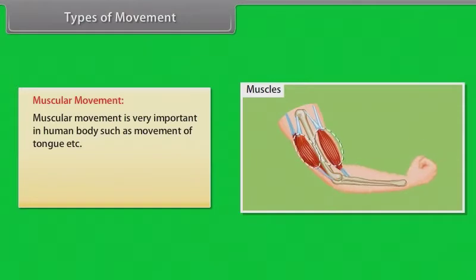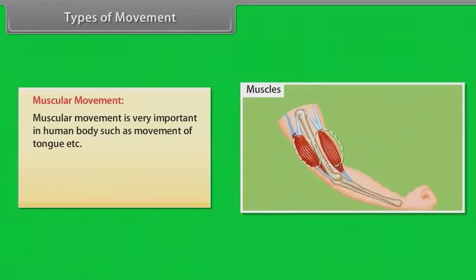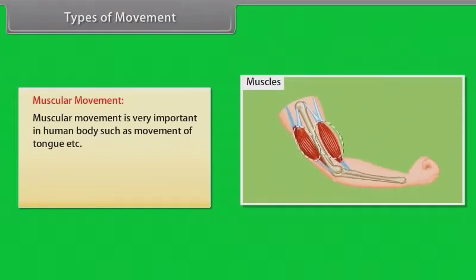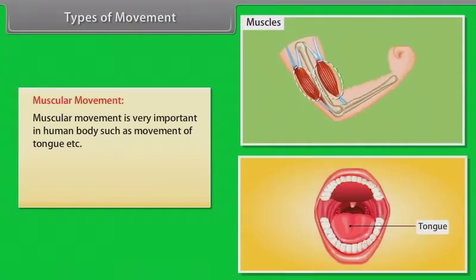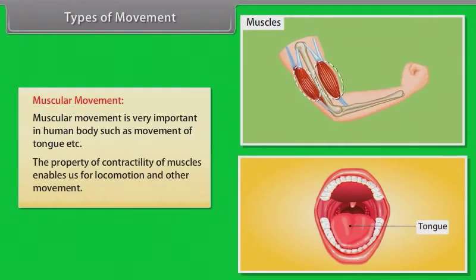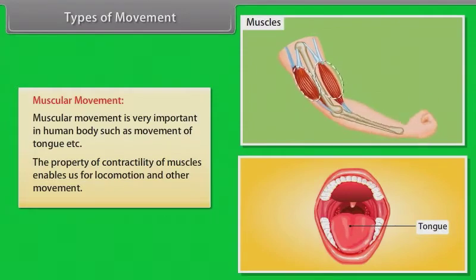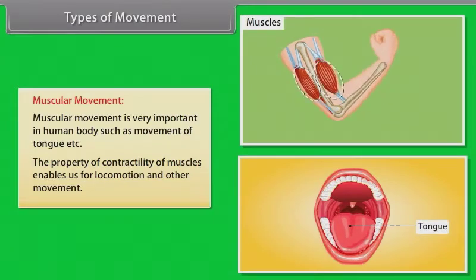Muscular movement is very important in the human body, such as movement of the tongue. The property of contractility of muscles enables us for locomotion and other movements.